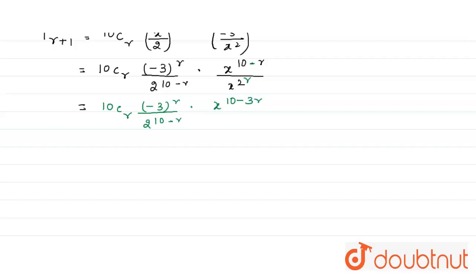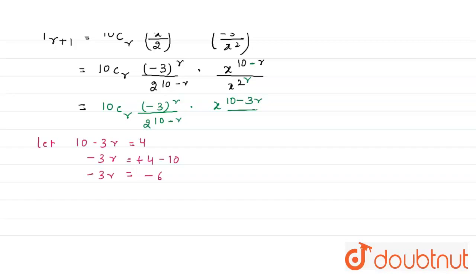We have to find the coefficient of x⁴. So we set the exponent of x equal to 4: 10 − 3r = 4. Solving: −3r = 4 − 10 = −6, so the value of r is equal to 2.